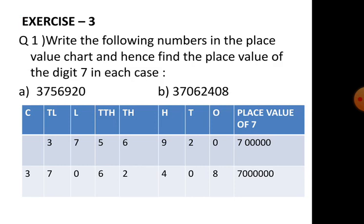Next we will start Exercise 3: write the following numbers in the place value chart and find the place value of digit seven in each case. We will first make the place value chart with columns: ones, tens, hundreds, thousands, ten thousands, lakhs, ten lakhs, and crores. We place the digits starting from the ones place. After placing the digits for part (a), we find that seven is in the lakhs place, so the place value of seven is seven lakhs.